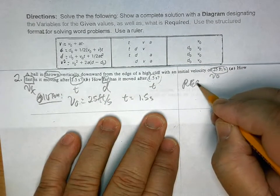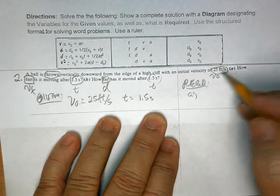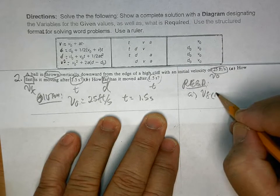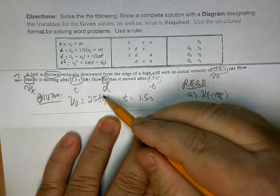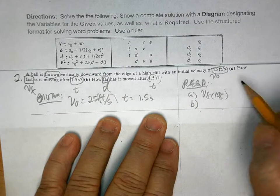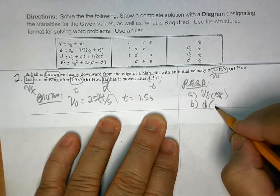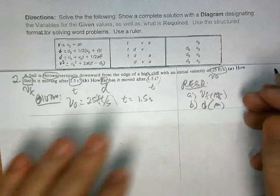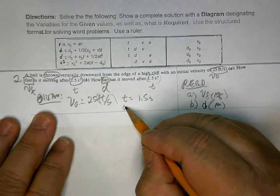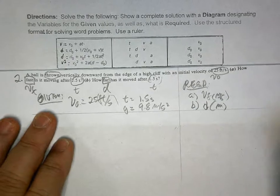And what are you required to solve for? A is VF in meters per second. Look, you're given that in feet per second. And then B is distance in meters. And what you're also given is that g is 9.8 meters per second squared.